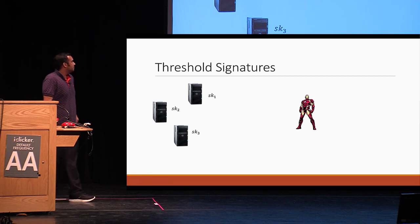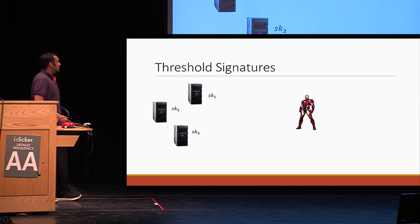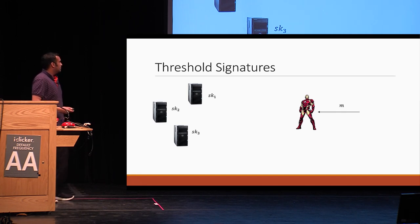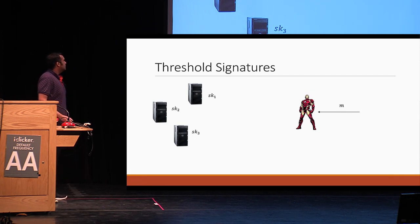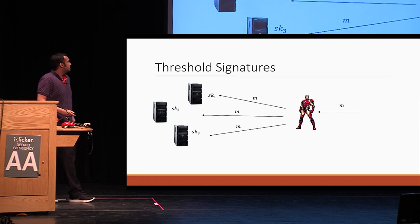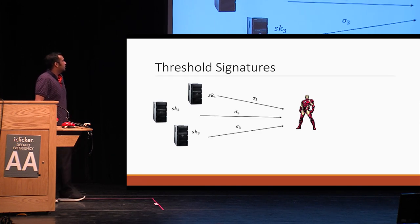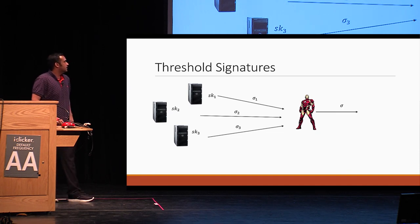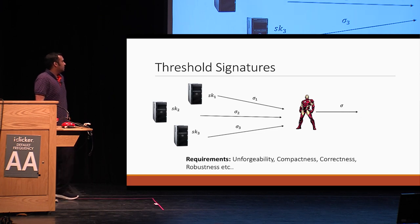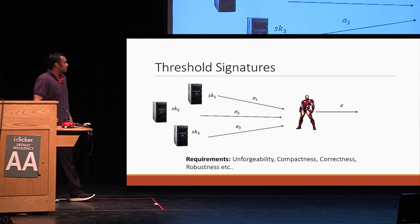Let's look at threshold signatures concretely. In this application, Tony wants to have a signature on a message. Suppose he has already secret shared his signature key with N servers. He should be able to relay this message to the servers and then get some kind of partial signatures, which he should later be able to combine to recover the final signature. As with all signature schemes, we would require this notion to satisfy various requirements such as unforgeability, compactness, correctness, robustness, etc.